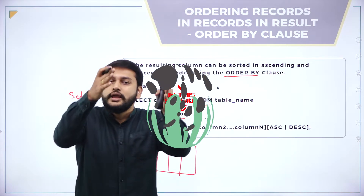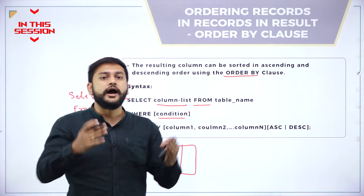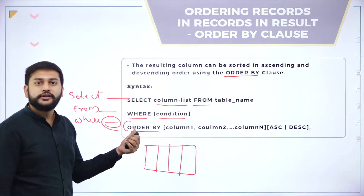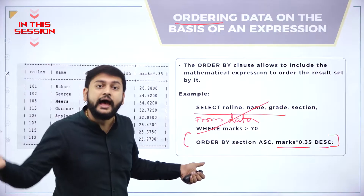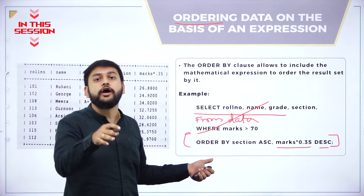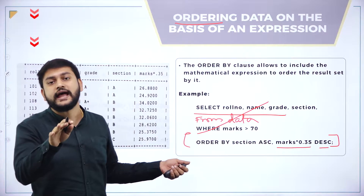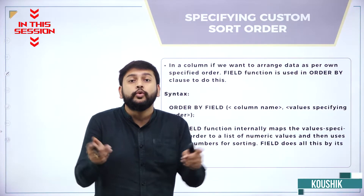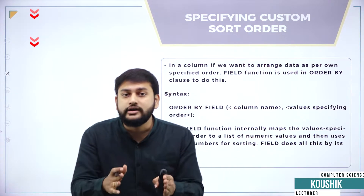If you want to sort the data in a column, you have to use the keyword ORDER BY. You can have an expression in the ORDER BY clause, which is what you need to understand. You can specify how exactly your data should get sorted in the column.